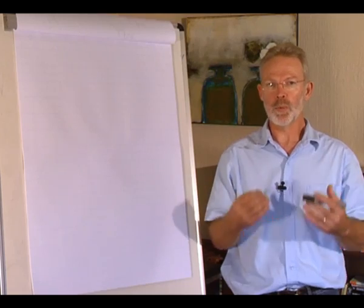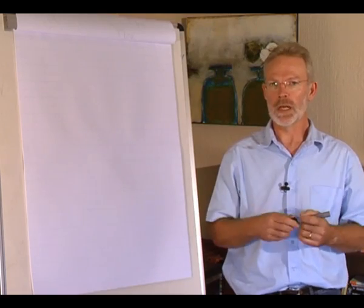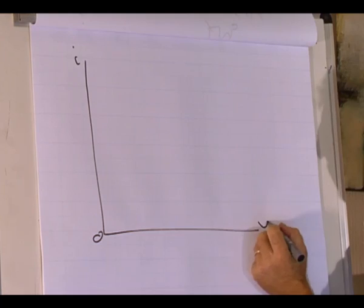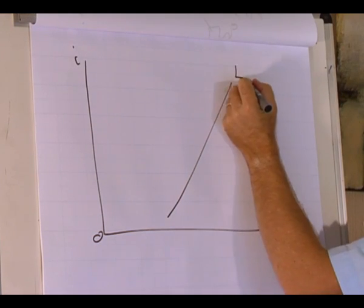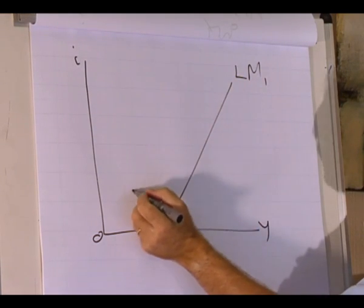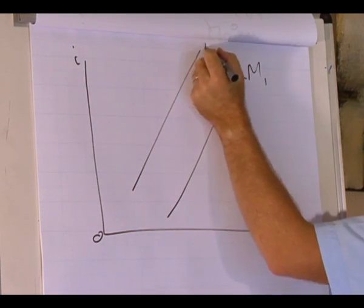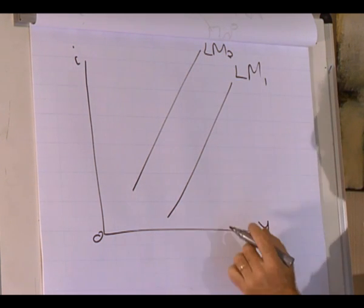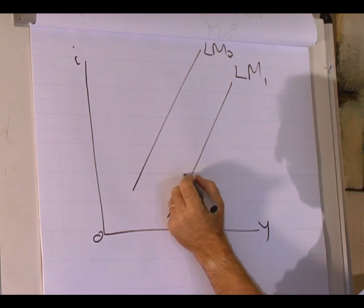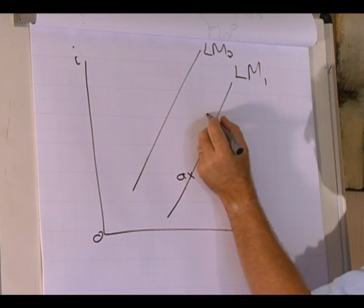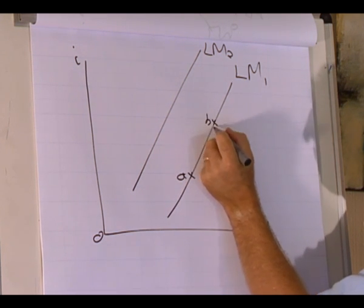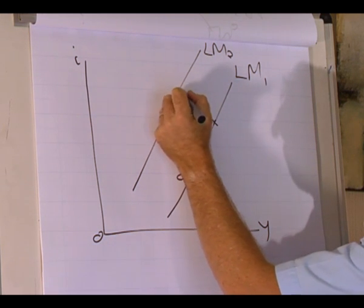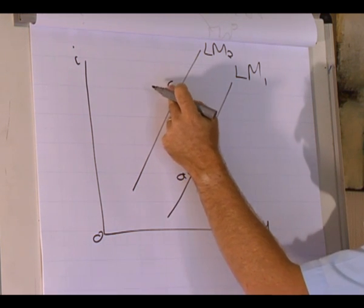We're now going to compare different points on different alum curves. We have two alum curves, alum curve 1 and alum curve 2. We have different points on these two alum curves: point A and point B on alum curve 1, and point C on alum curve 2.